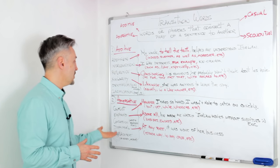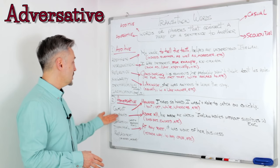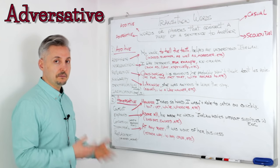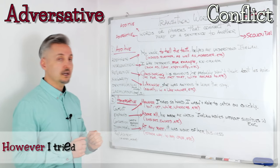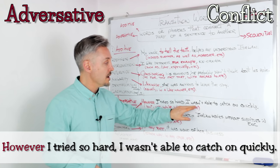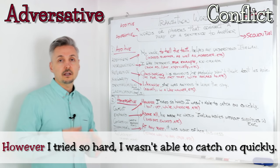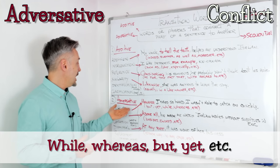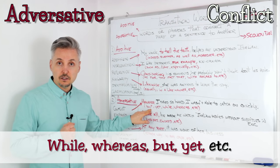The second group is adversative, and adversative has five subgroups: conflict, emphasis, concession, dismissal, and replacement. An example of a conflict transition word is 'however': 'I tried so hard, I wasn't able to catch on quickly.' 'However' can be replaced with 'while' or 'whereas,' as well as 'but' or 'yet.'